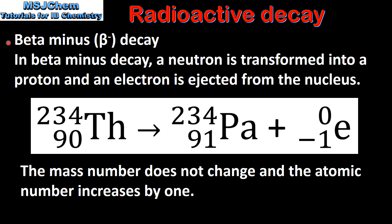Next we look at beta minus decay. In beta minus decay a neutron is transformed into a proton and an electron is ejected from the nucleus. In this nuclear equation we can see the beta minus decay of thorium-234.